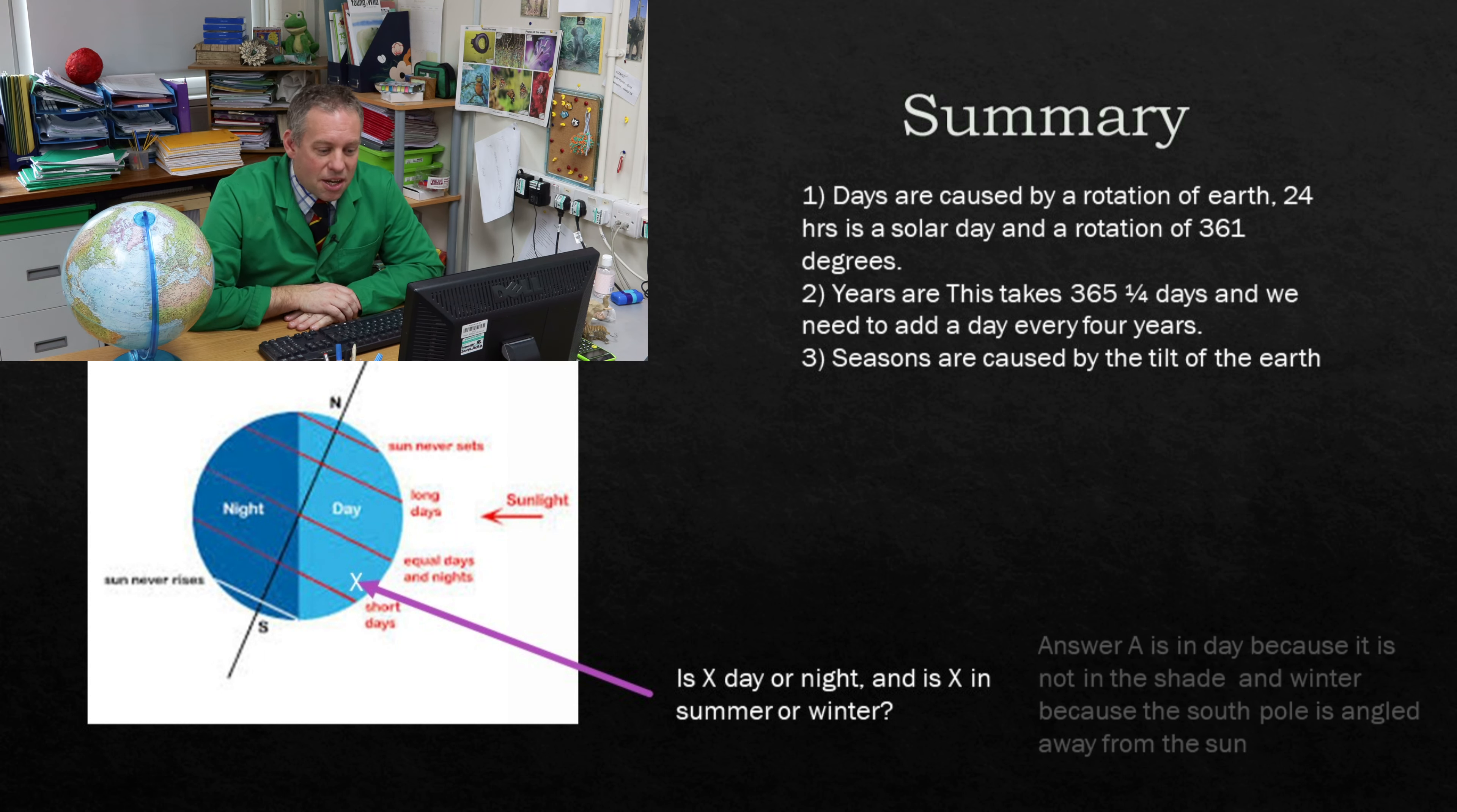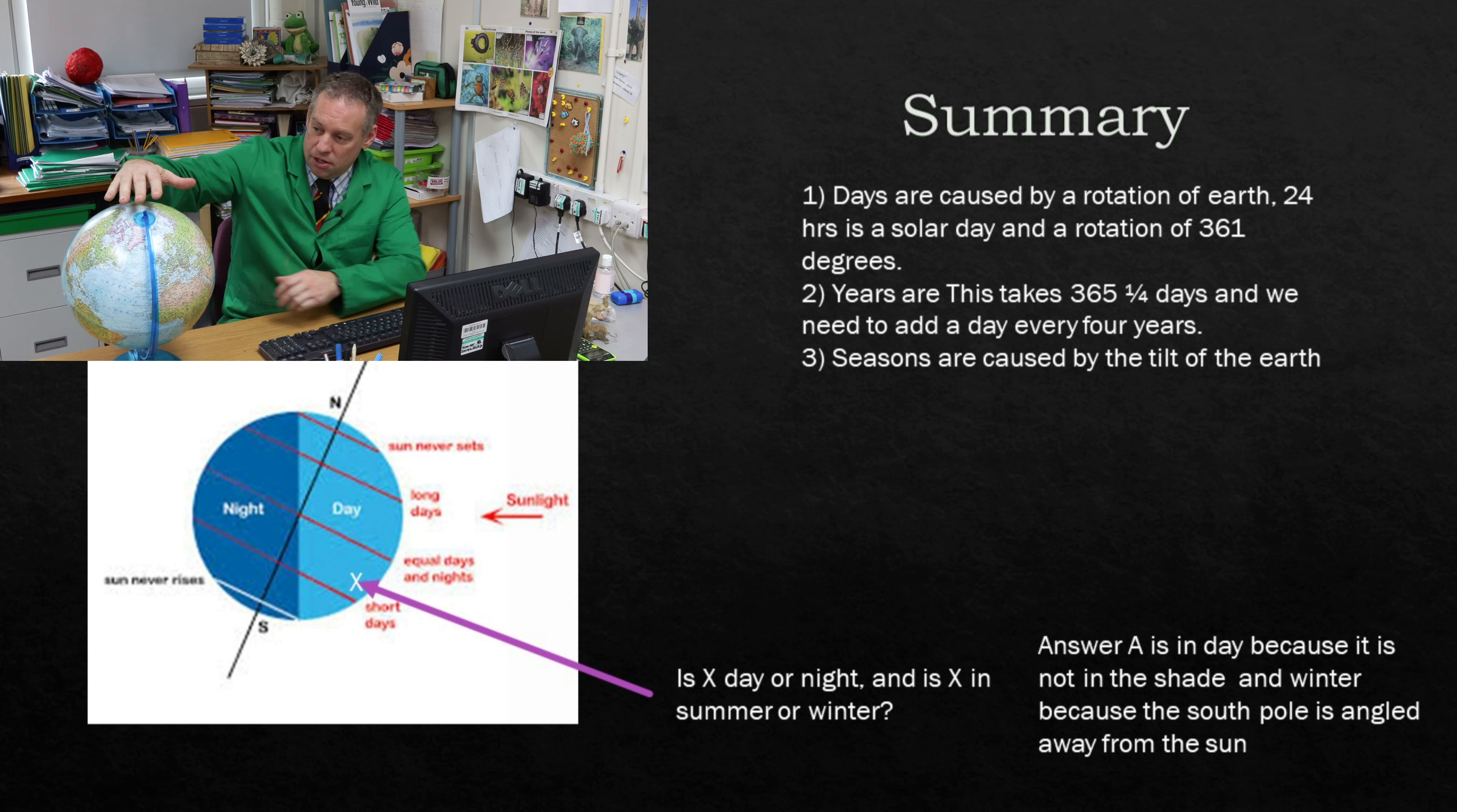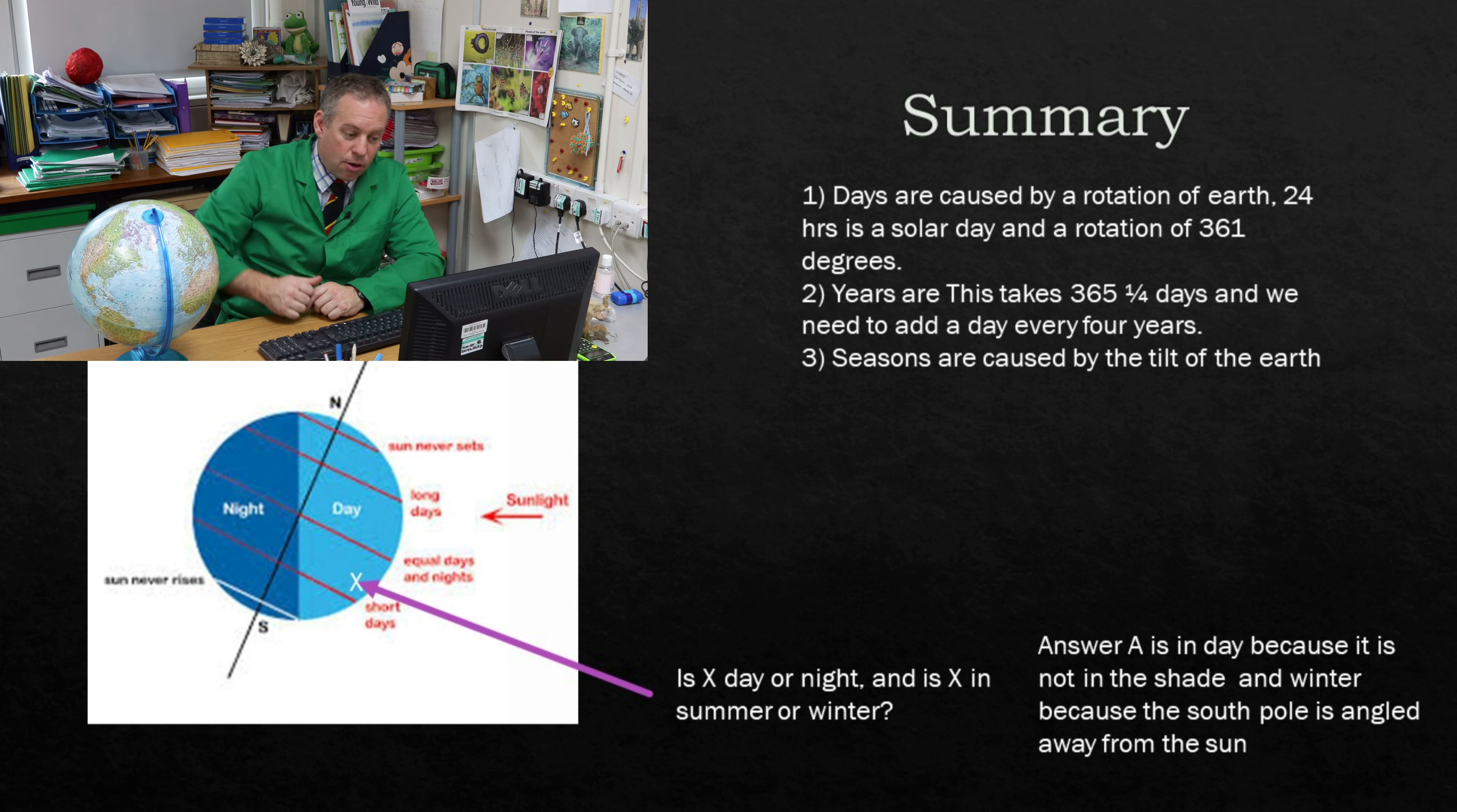OK, so let's look at the answers. So here we go. X is in day because it is in the side of the sunlight. So you can see it's not in the shaded side, it's in the side where the sunlight is facing. So A is in daytime but A is also in wintertime. Because if you look at the angle of the rotation, the angle of the Earth here, the tilt, you can see the northern hemisphere is angled towards the sun, the southern hemisphere is angled away. So that would be in the daytime at wintertime in the southern hemisphere.